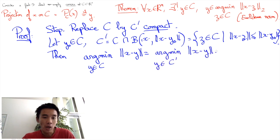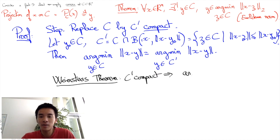But now C' is also bounded and thus compact. Since the Euclidean norm is continuous, by Weierstrass theorem we know that the minimization problem over C' has a minimizer Y.